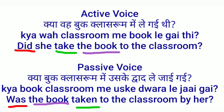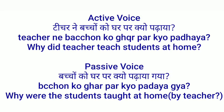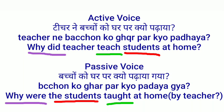'Why did the teacher teach students at home?' — passive: 'Why were the students taught at home by the teacher?' The students were the object so they become subject. Third form of 'teach' is 'taught' — why were the students taught at home by the teacher.